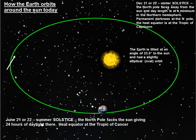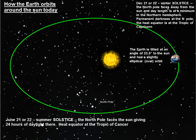Three months later again, we've got our next equinox and then we're back round to the start. That sequence gives us our seasons and our variation in insolation around the Earth.